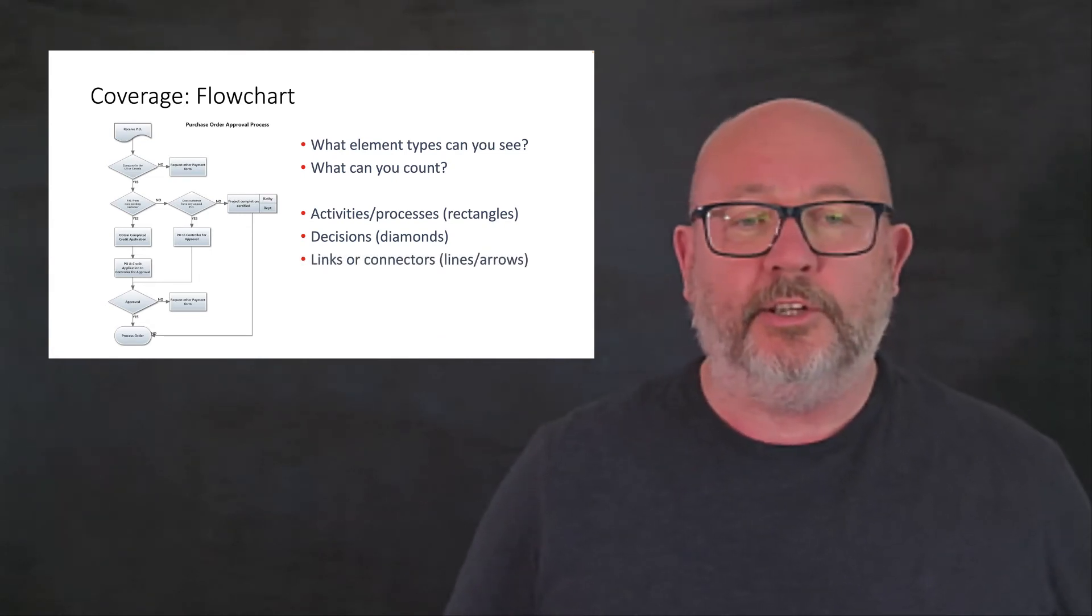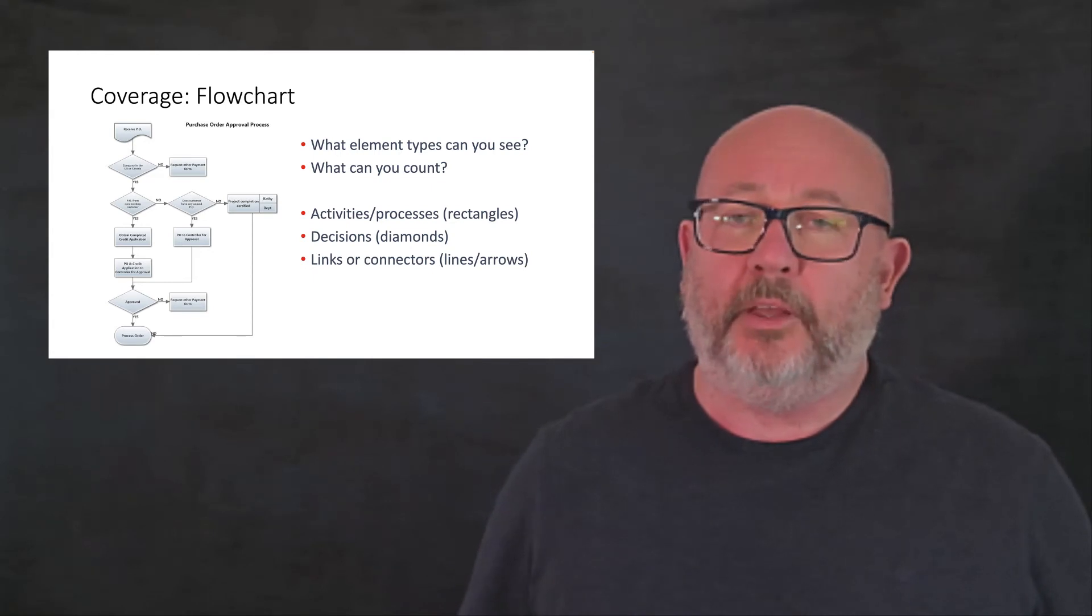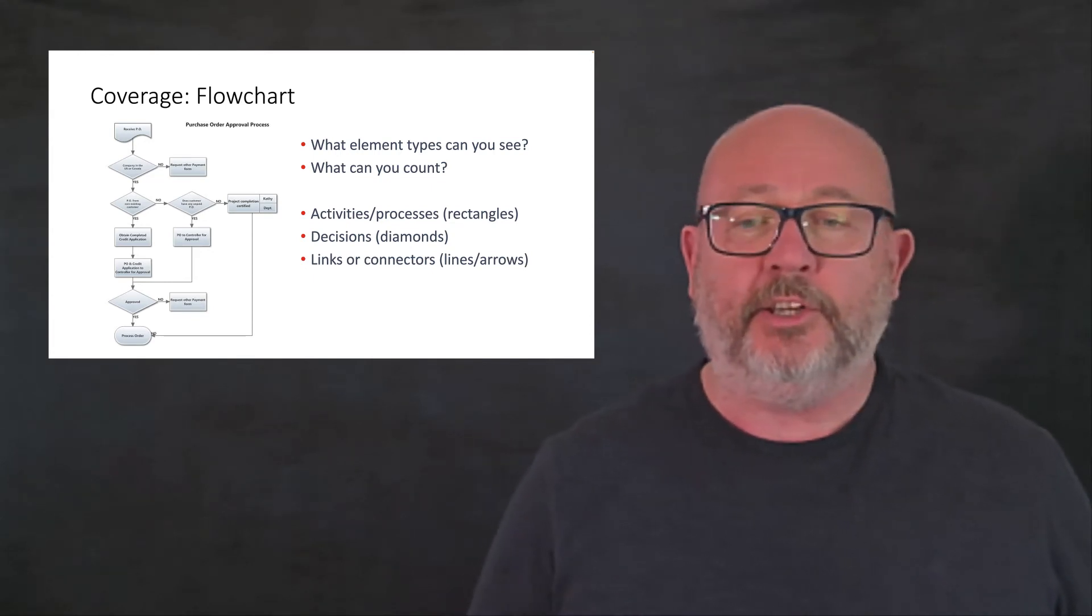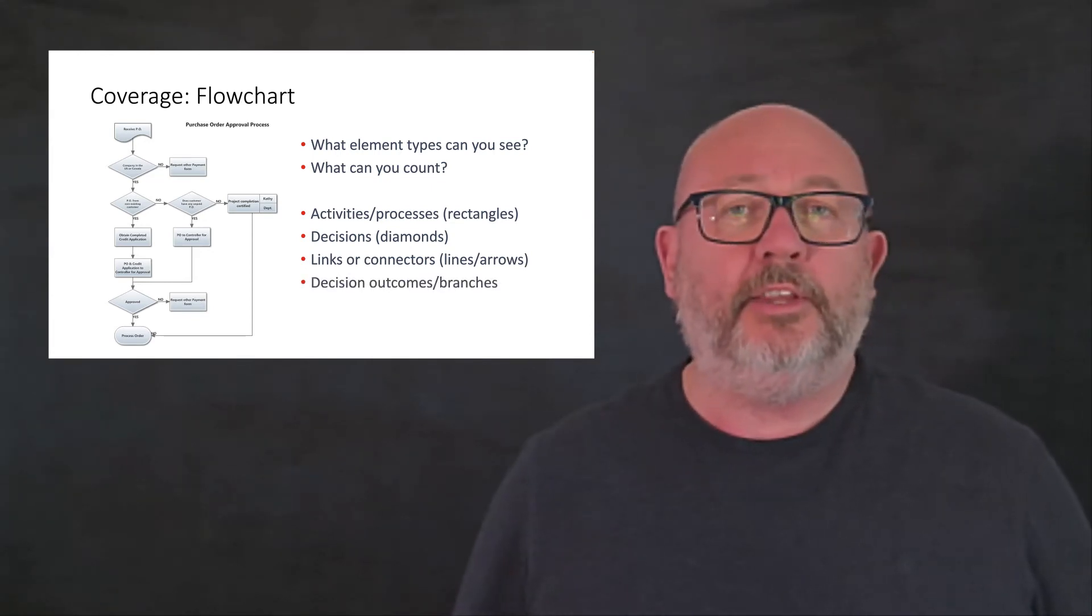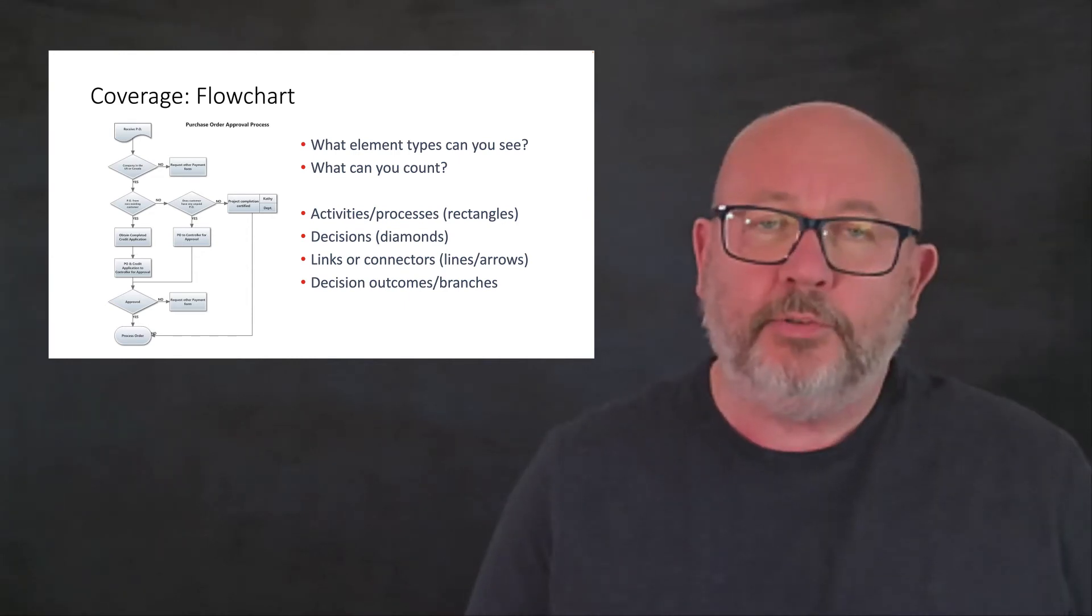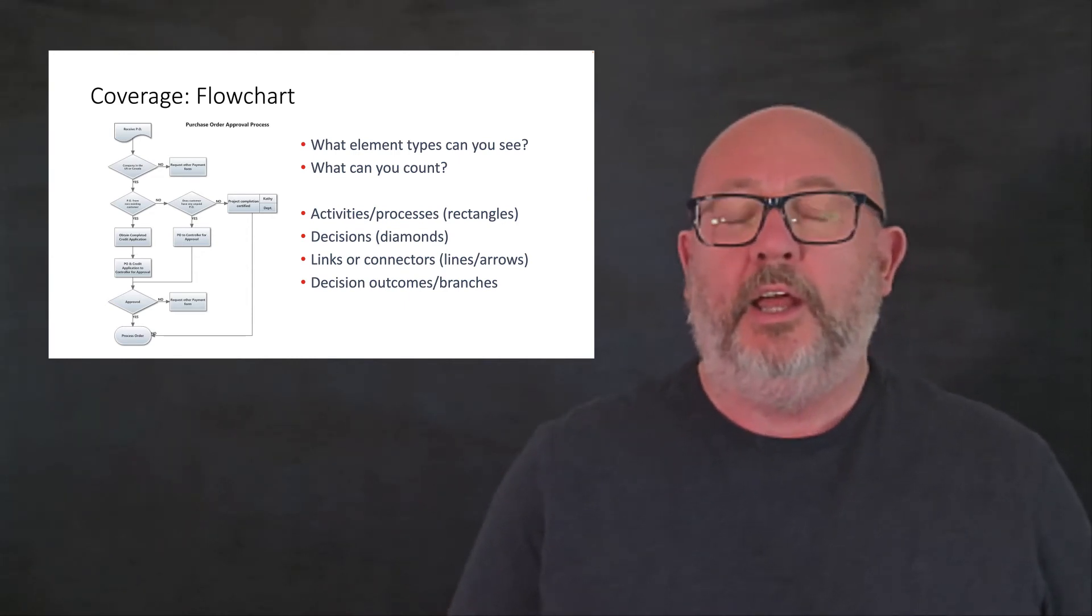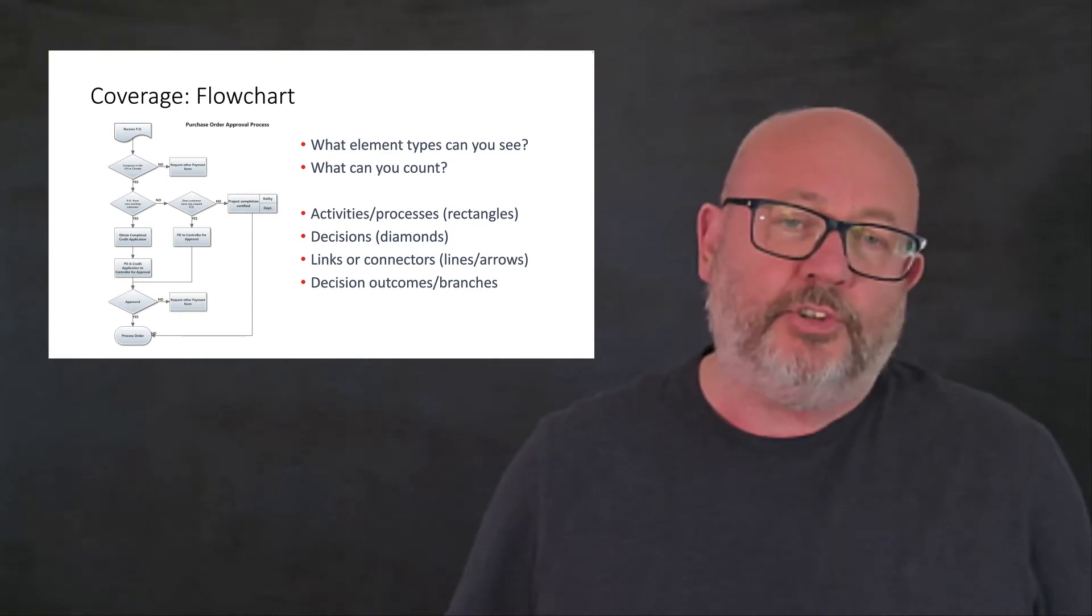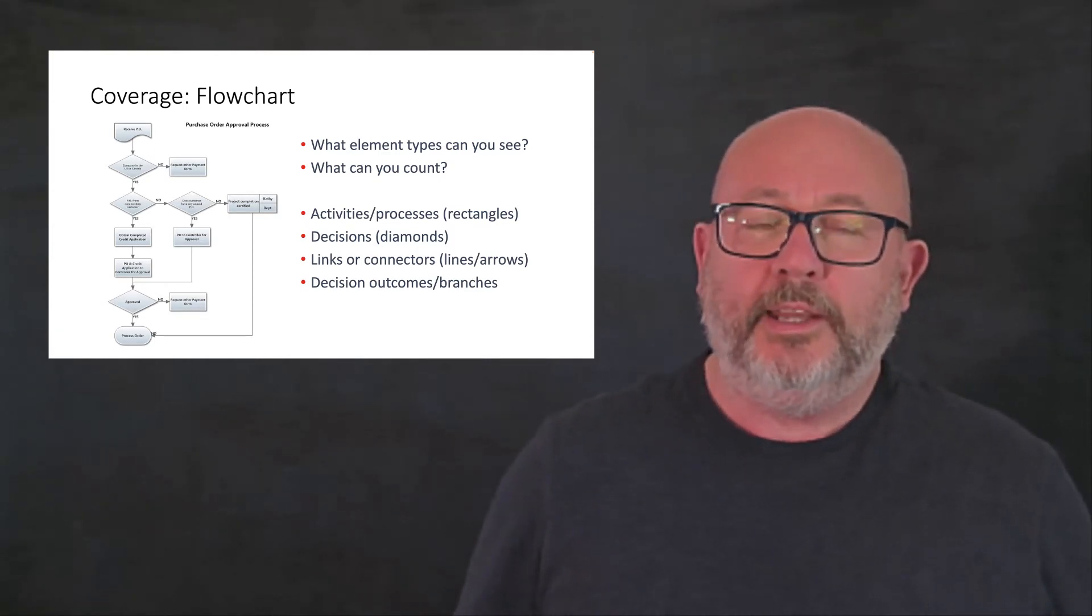We can look at the decisions that are made within the flow through this process. We can look at the links or connectors, you know, the arrows, if you like, that connect the activities and the decisions. And we can look at the individual outcomes of each decision, the individual outcomes for every true or false question in the process itself.